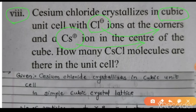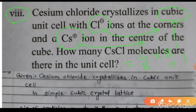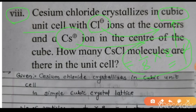In this problem, cesium chloride crystallizes in a simple cubic unit cell. In a simple cubic cell, the number of atoms is equal to 1/8 × 8 = 1, meaning one atom or particle is present at each corner. So one Cl⁻ ion particle is present at the corners.